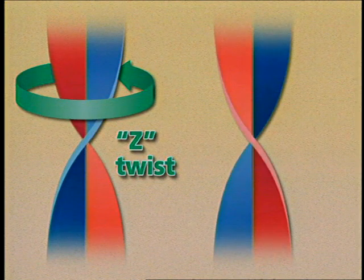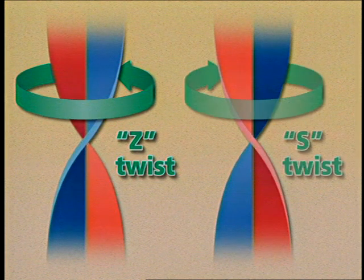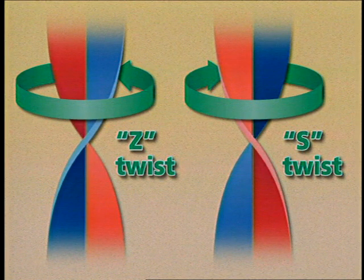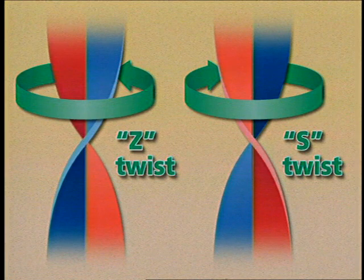Sometimes S twist yarns will be produced for special technical reasons, and S twist yarns have a helix angle in the S direction. Because of its mechanical design, yarns produced on the OE system will always be Z twist yarns.